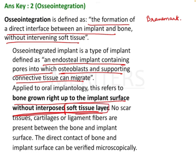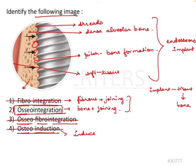This is very important — that is why the other options are not correct. The fibro integration and osteofibro integration options are not correct because osteointegration is without a soft tissue layer. There is no scar tissue, cartilage, or ligament fibers between the bone and the implant surface. This direct contact is verified microscopically. So the answer to this question is osteointegration.